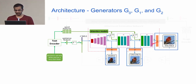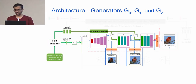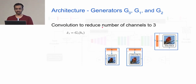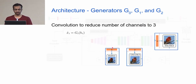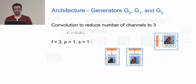Each F generator has a corresponding G generator with the same structure. Since all upsampling is already done, the G network only needs a single 3×3 convolution block with padding 1 and stride 1 to reduce the final number of channels to 3, producing an RGB image. It takes the context vector from the current stage and outputs X-hat I, the generated image at that stage.